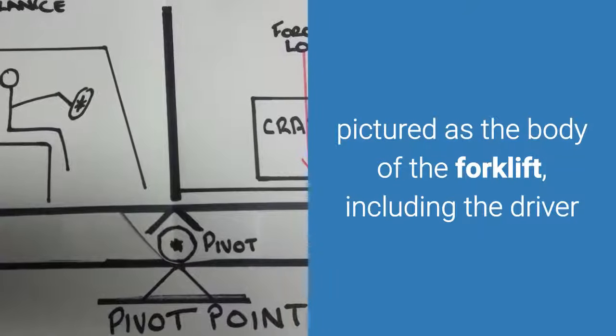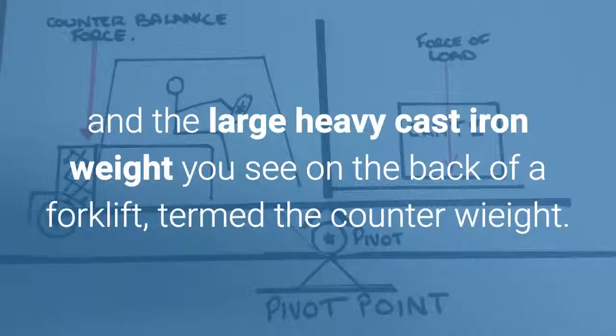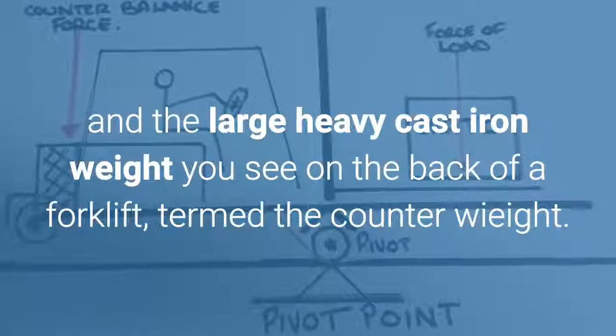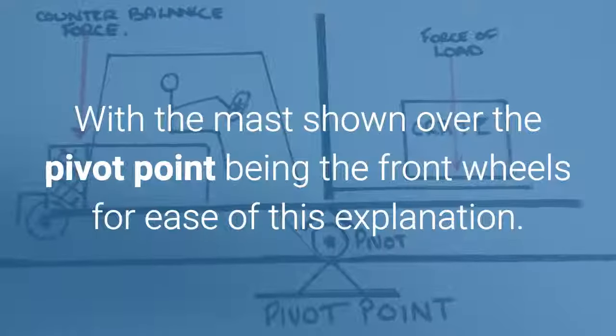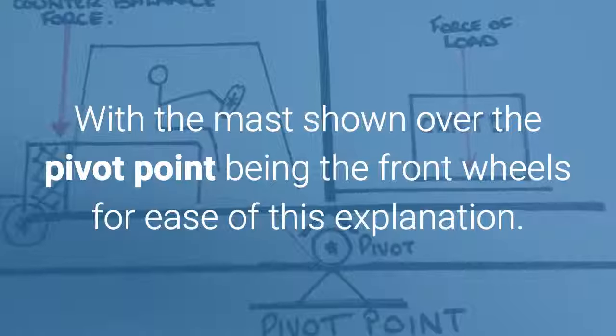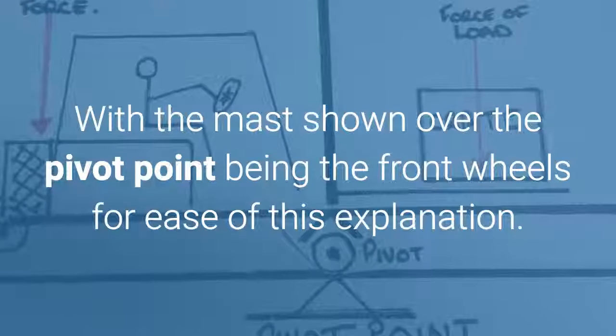Pictured as the body of the forklift, including the driver, and the large heavy cast iron weight you see on the back of a forklift, termed the counterweight, with the mast shown over the pivot point being the front wheels for ease of this explanation.